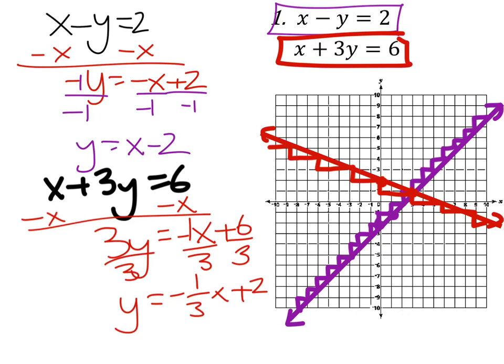And we can see the point of intersection is right here. So what is the coordinates of that point? We can see that the x value is 3 and the y value is 1. And that right there is our answer.